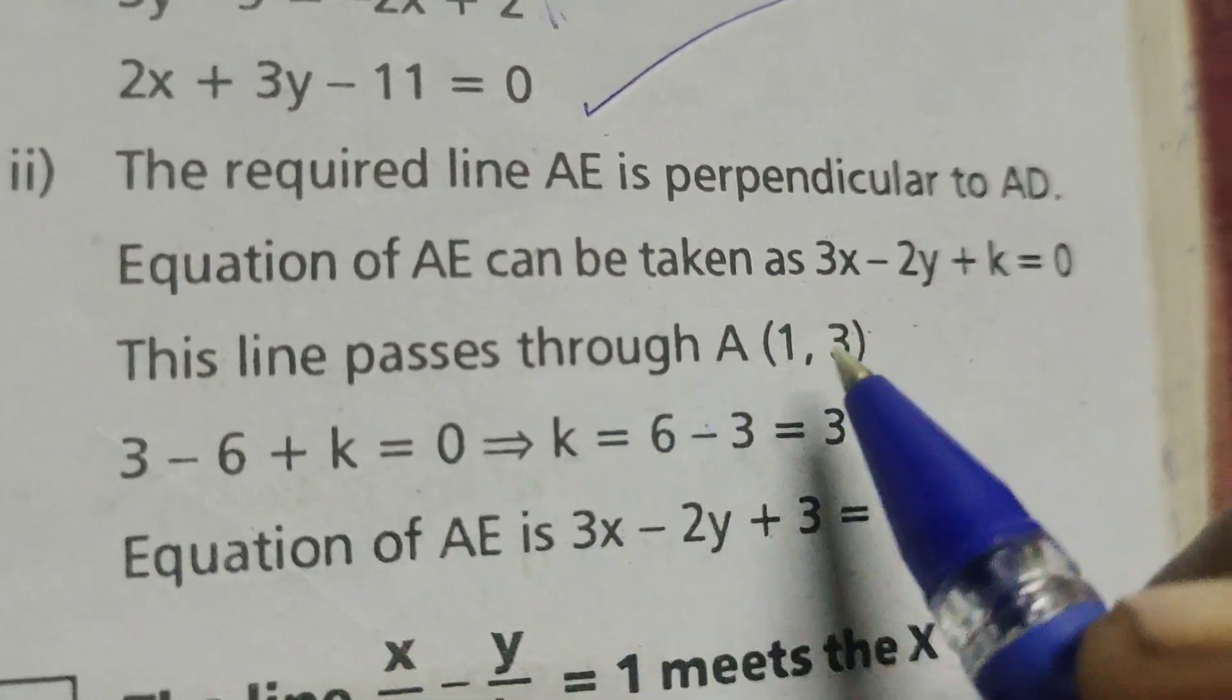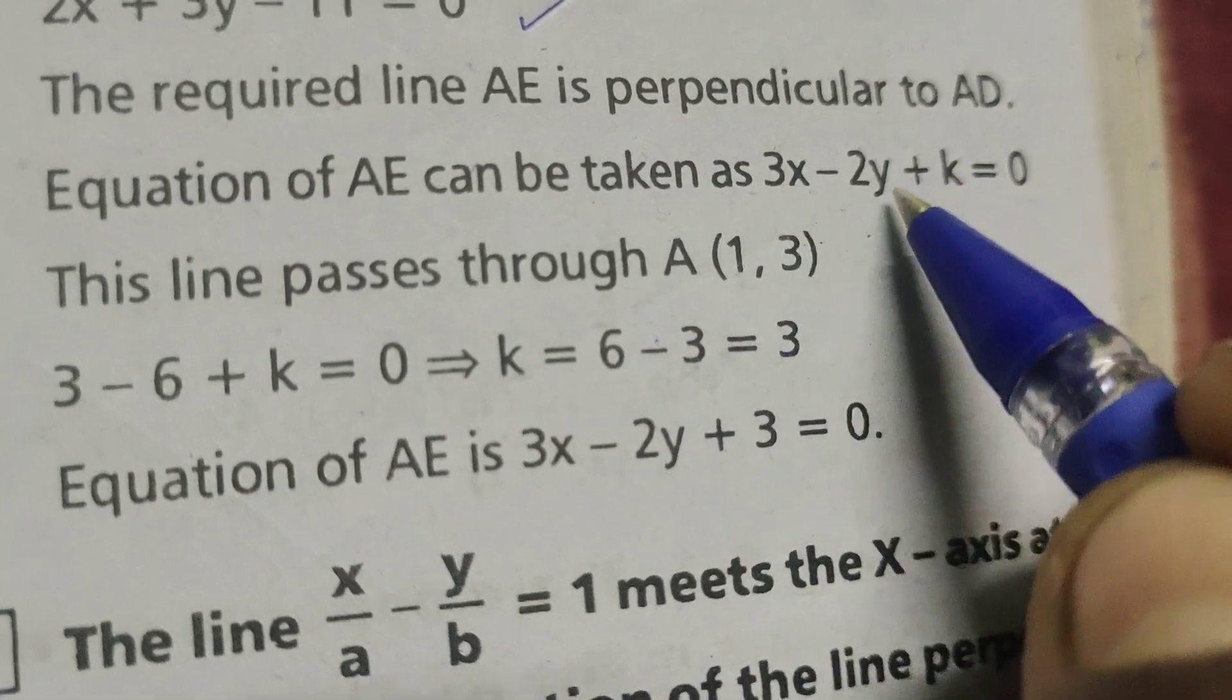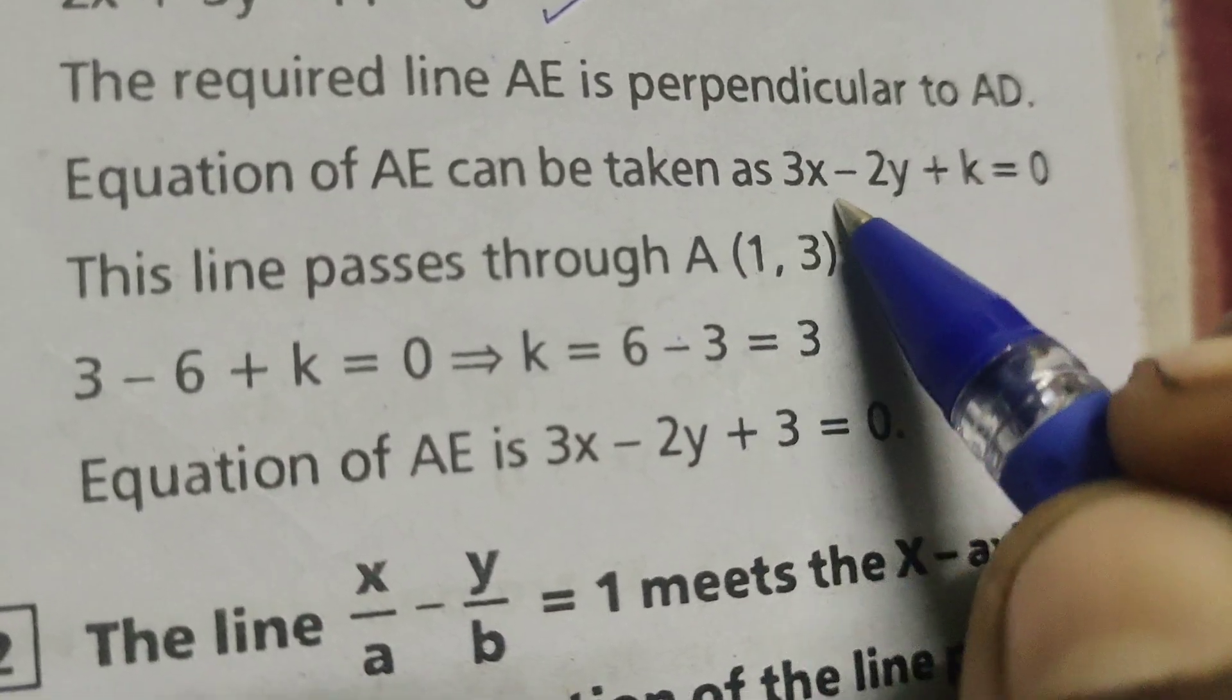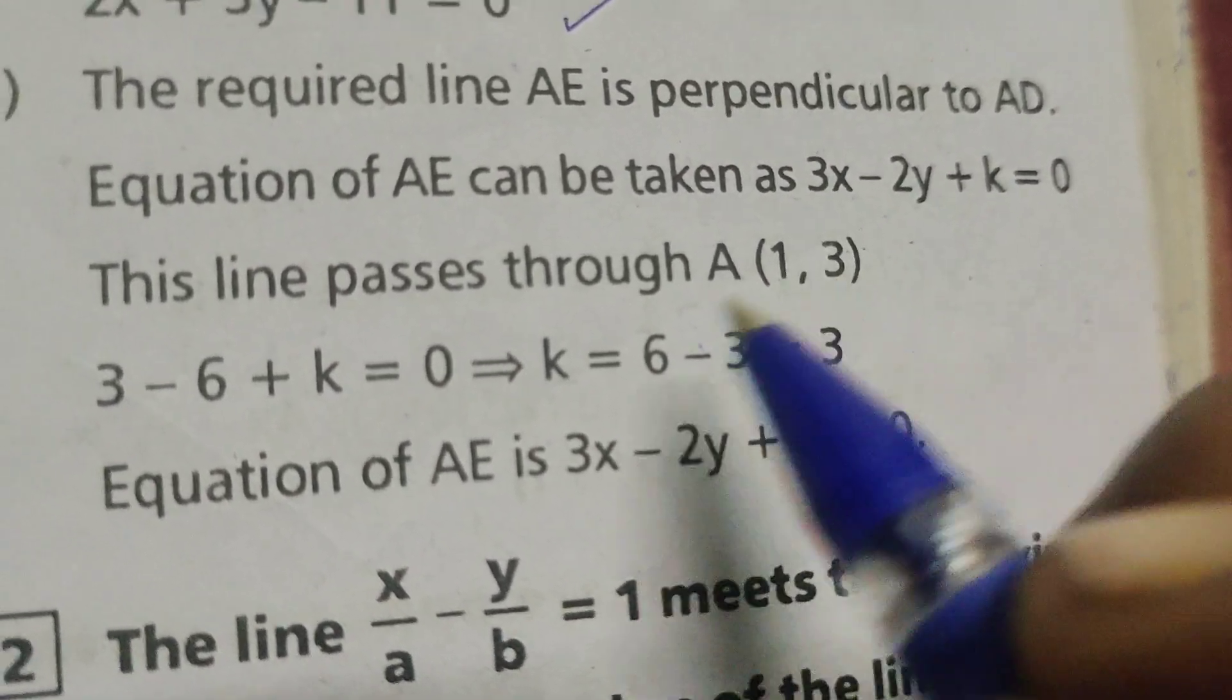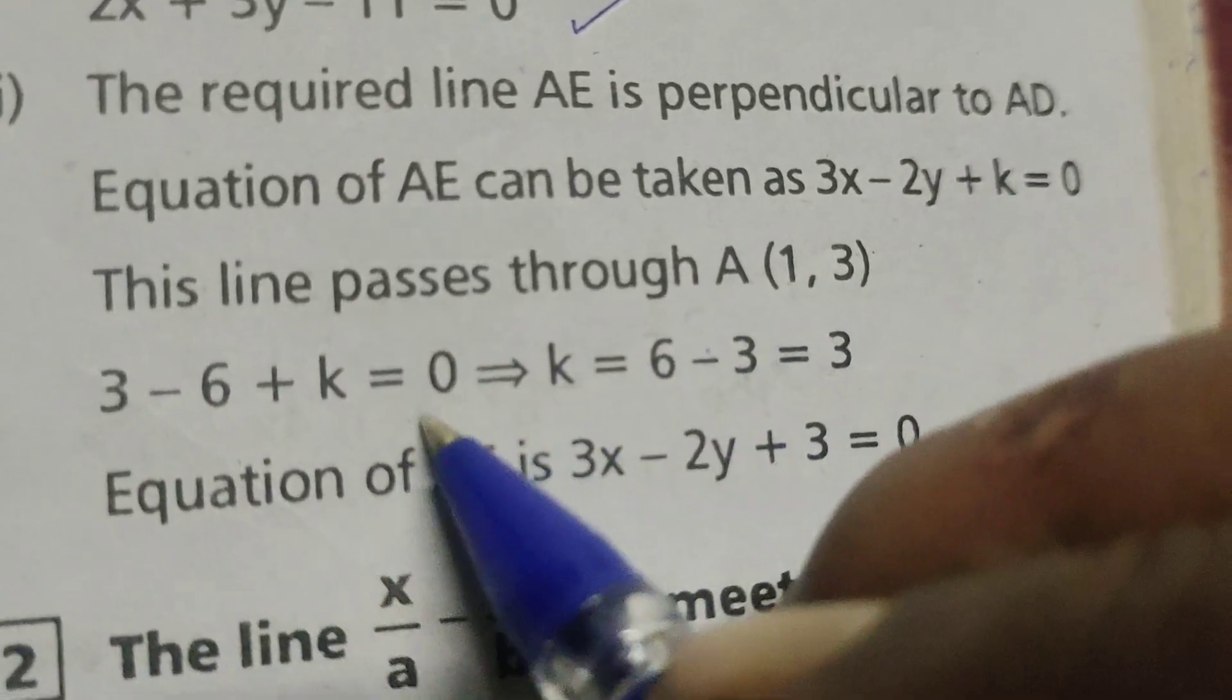Then find out the equation, 3 minus, here substitute in place of x1, y means 3. 3 minus 2, 3 is 6, plus k equals to 0.